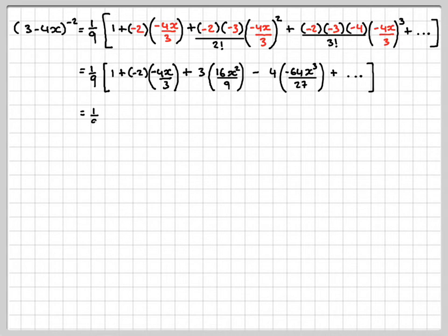So now we've still got 1/9 of [1 + (-2)×(-4/3) becomes +8/3 + 16/3 (the 3 will cancel, that 9 will cancel with that 3) and the minus minus becomes +256x³/27].